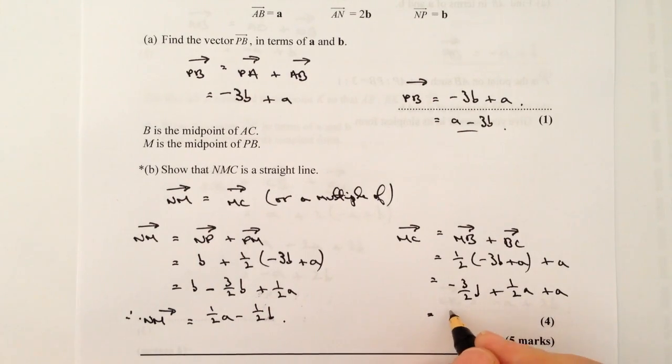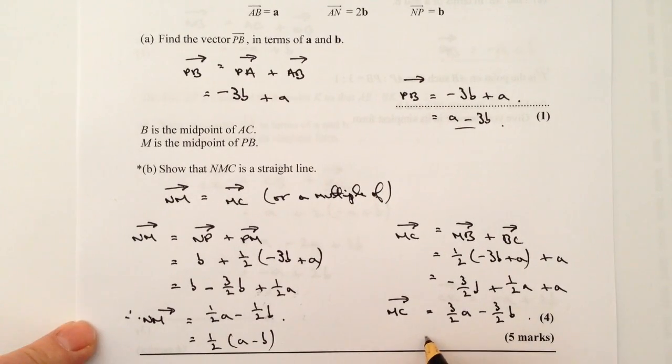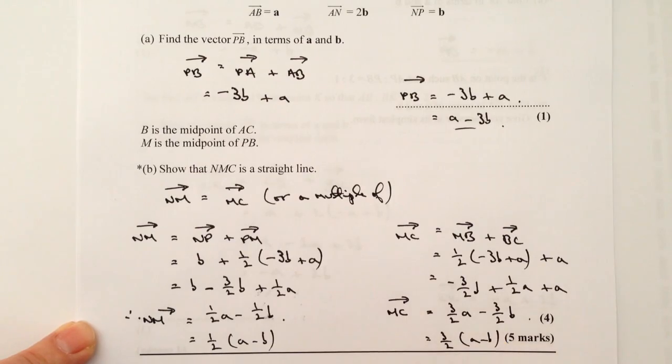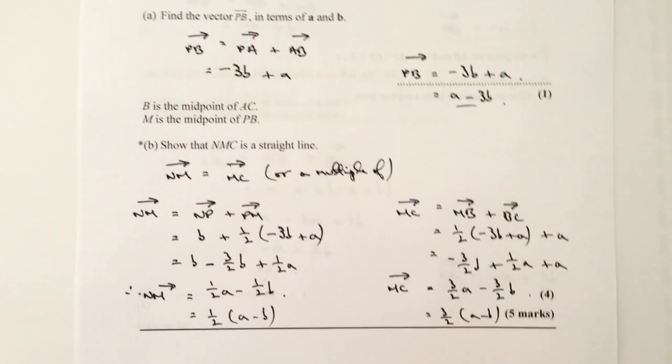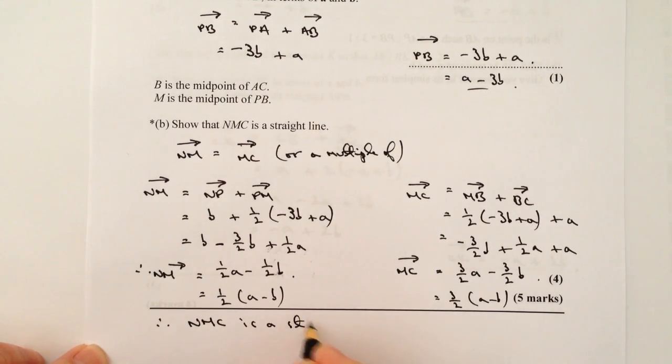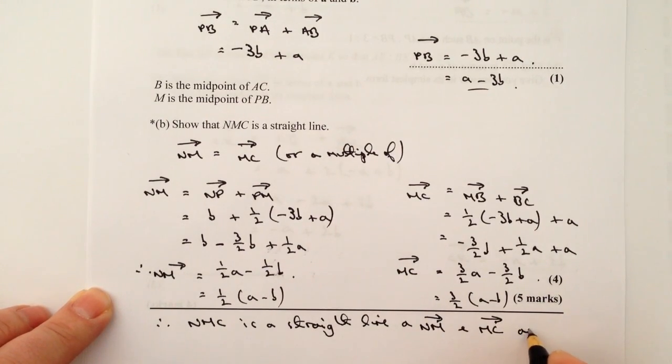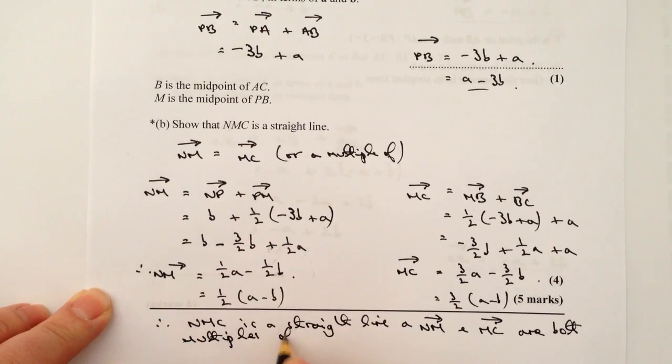And you can clearly see here that both are multiples of the vector A minus B. Because this, if I wanted to rewrite it, I could rewrite it as a half (A minus B). And this I could write as equal to three over two (A minus B). And I would put a line in here somewhere along the bottom to say that it is a straight line. So therefore, NMC is a straight line as vector NM and vector MC are both multiples of A minus B.